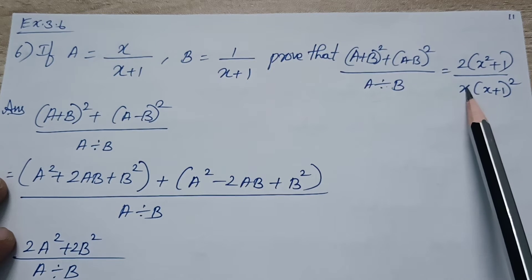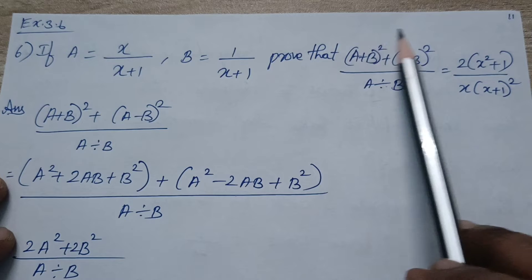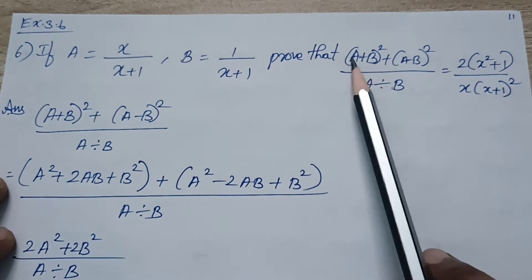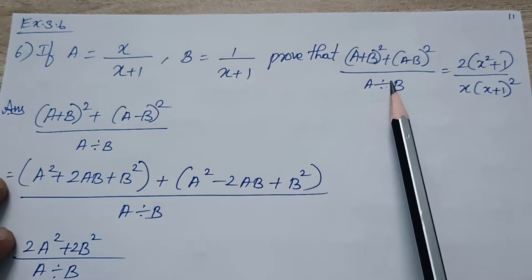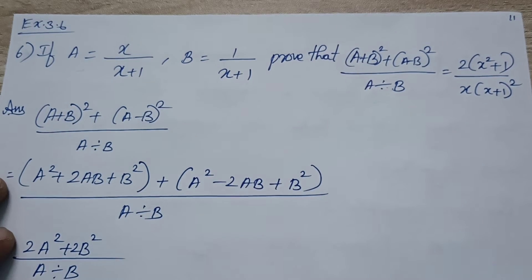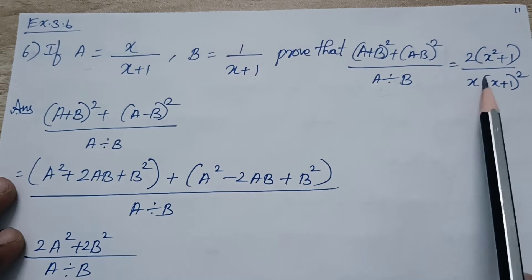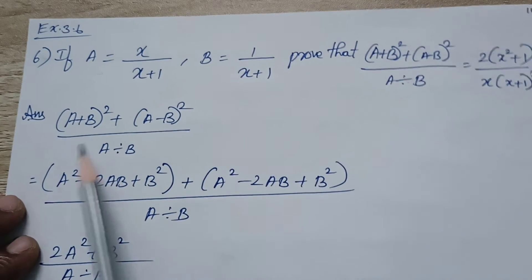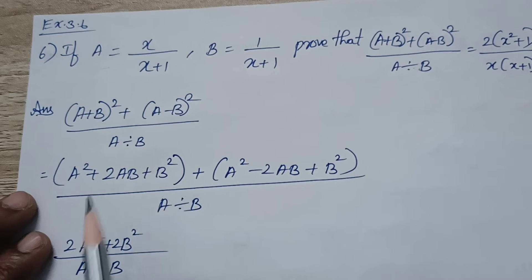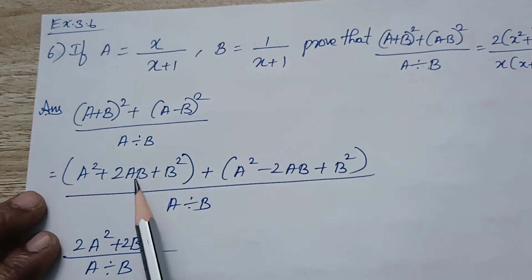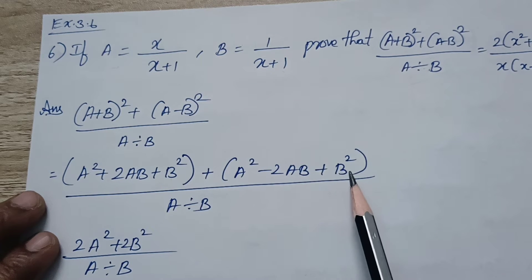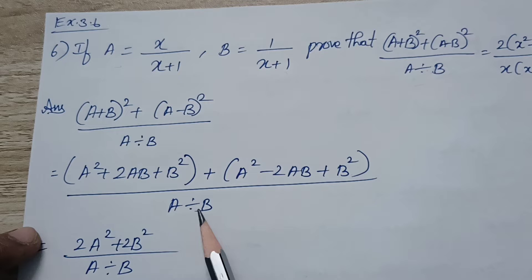So this is equal to this in proof 1. On the original expression, I am going to simplify it — mark it. Simplify A and B values, substitute to make it easy. A plus B the whole square formula is A square plus 2AB plus B square, plus A minus B the whole square formula is A square minus 2AB plus B square, divided by A divided by B.